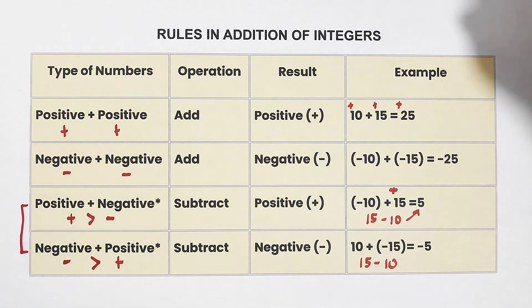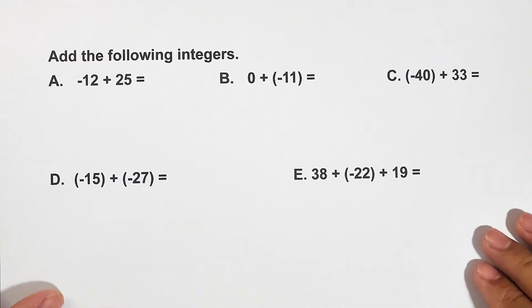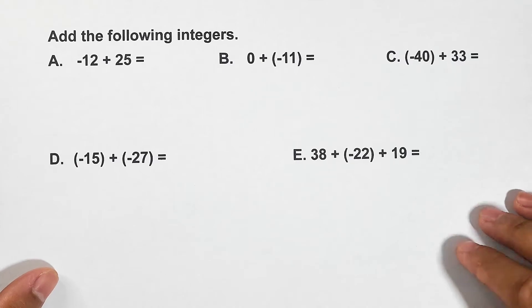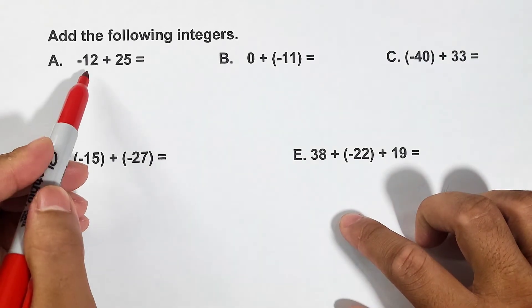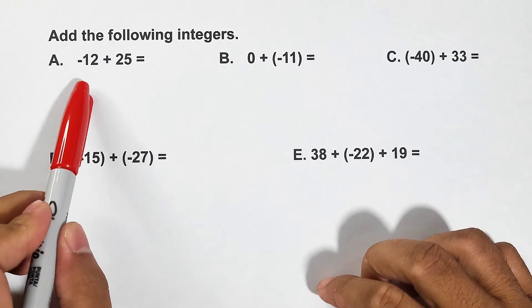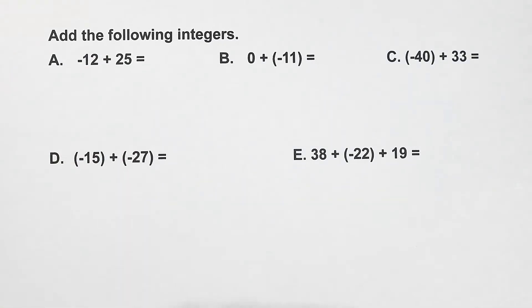Now, to practice the rules we discussed here, let's go with these examples. It says add the following integers. Now look at this one. In letter A, we are given negative 12 plus 25.